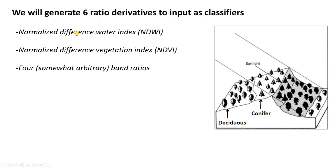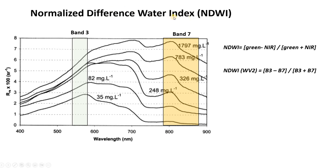In this video we're going to use six different things: a Normalized Difference Water Index (NDWI), a Normalized Difference Vegetation Index (NDVI), and four band ratios that are somewhat arbitrarily picked. The NDWI is based on the reflectance spectra of water, which is high in band 3 and relatively low in near-infrared band 7. This index takes green band minus near-infrared divided by green band plus near-infrared — for WorldView-2, that's B3 minus B7 divided by B3 plus B7.